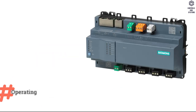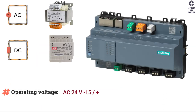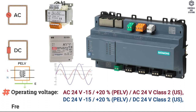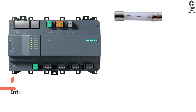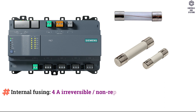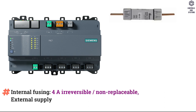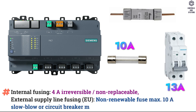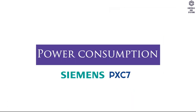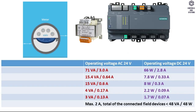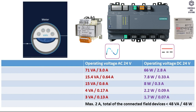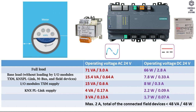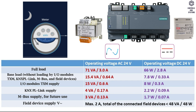Electrical Data: Operating Voltage is AC or DC 24V, +20%/-15%, PELV. Frequency is 48 to 60Hz. Internal Fusing is 4A, irreversible and non-replaceable. External Supply Line Fusing is non-renewable fuse maximum 10A, slow blow or circuit breaker maximum 13A. The power consumption table indicates AC and DC 24V full load, base load, TXMIO Modules, KNX PL Link, MBUS Supply and Field Device.